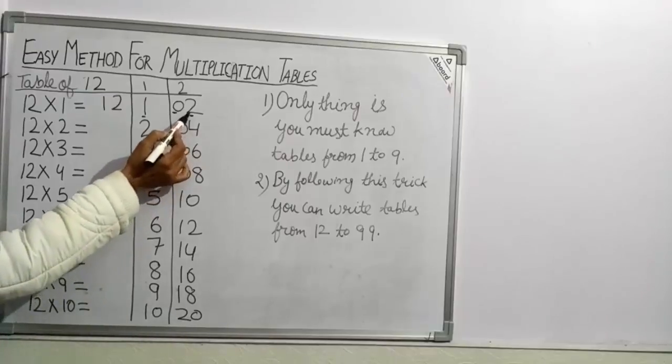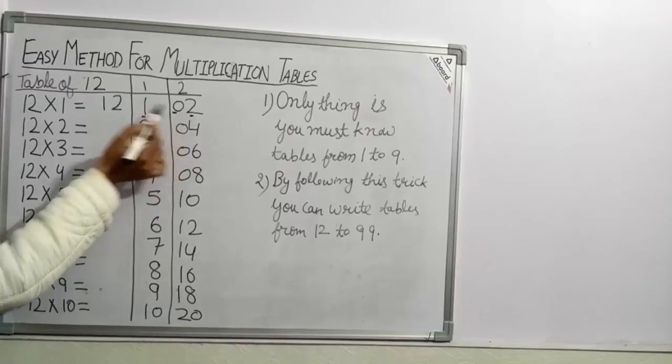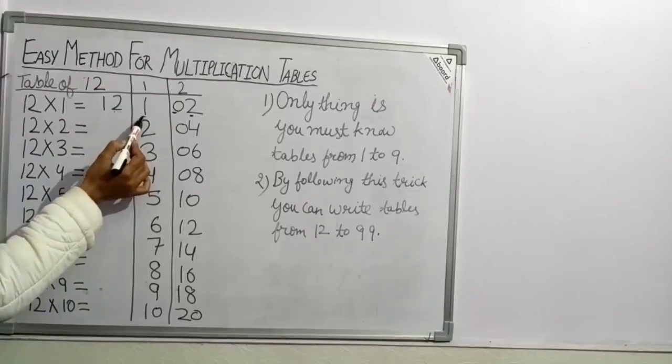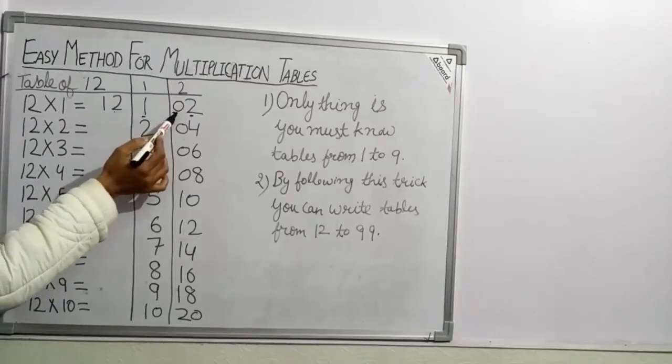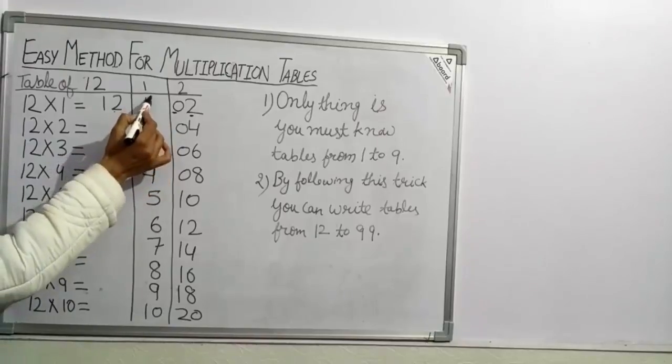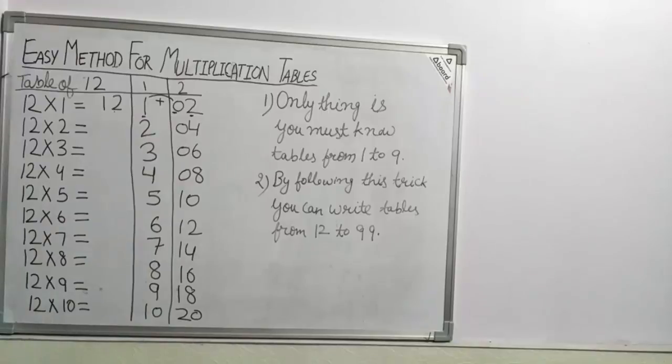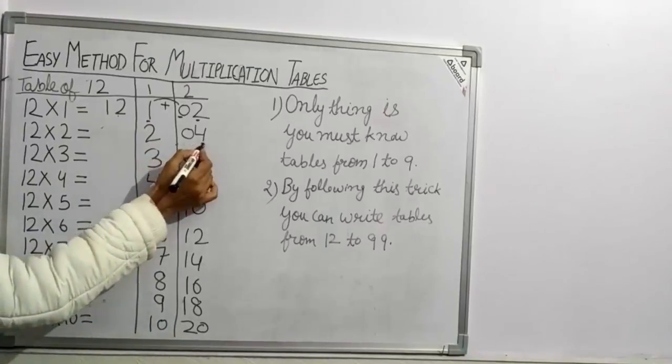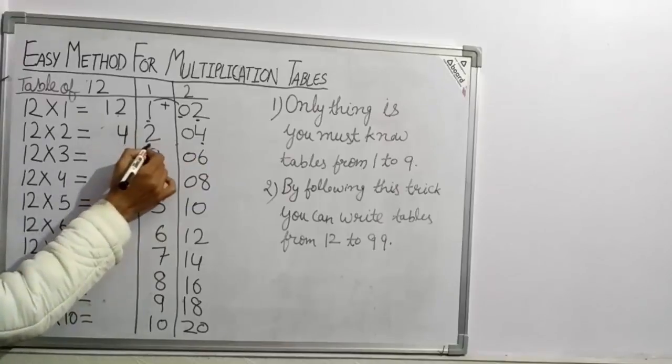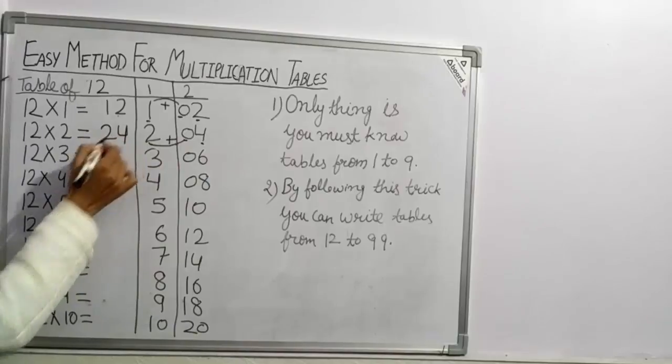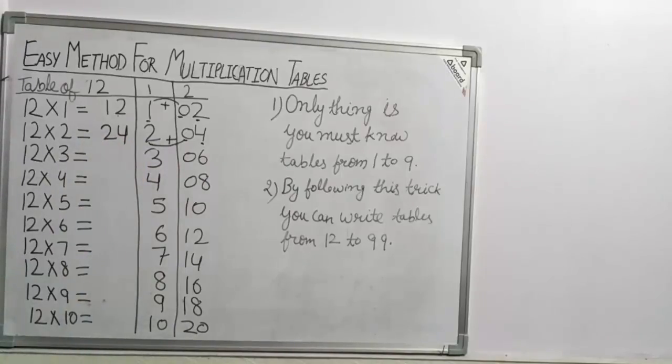I repeat, take unit place of table 2 as it is. And add table 1's answer plus remaining digit of table 2. That is 1 plus 0, 1 plus 0, 1. 12×1 = 12. Now take 4. 2 plus 0, 2 plus 0, 2. 12×2 = 24.